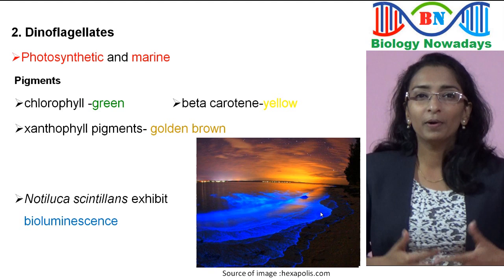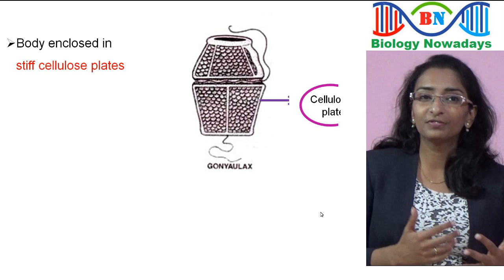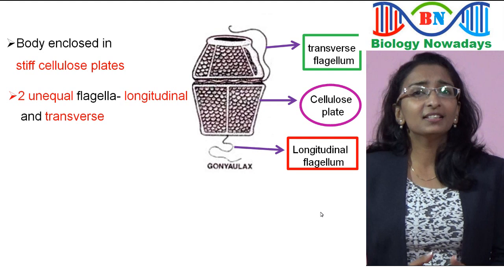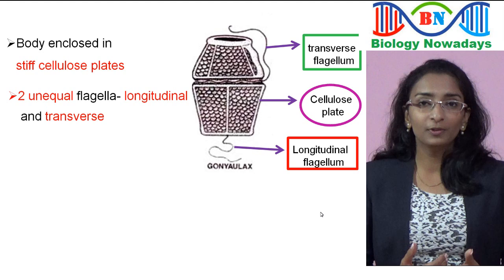The body of dinoflagellates is enclosed in stiff cellulose plates. The cellulose plate of the dinoflagellate Gonyaulax is shown in this picture. They have two unequal flagella — longitudinal and transverse. The longitudinal flagellum is directed towards the end of the cell along the longitudinal groove, while the transverse flagellum is flat and ribbon-like, located in the transverse groove called the girdle.